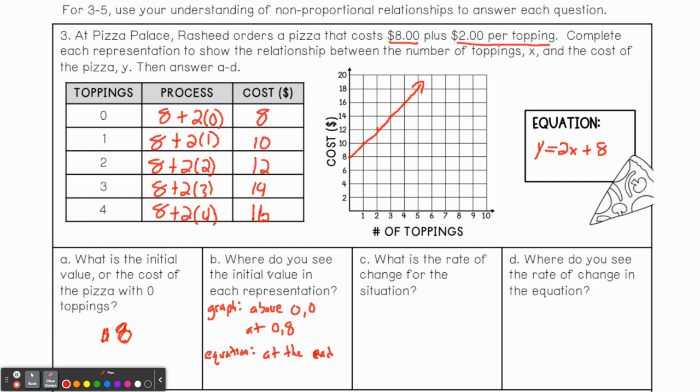All right. So C, what is the rate of change for the situation? It is our variable or our coefficient, which is $2. And where do you see the rate of change in the equation? At, well, it's right before, right before the variable. Also we call this the coefficient. So I know I said it, but I want to make sure we write that down as well. Because it is called the coefficient and it is a term that we're going to use from time to time. I want to make sure we have our terminology down.